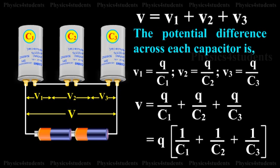V equals Q by C1 plus Q by C2 plus Q by C3. That is equal to Q into 1 by C1 plus 1 by C2 plus 1 by C3.